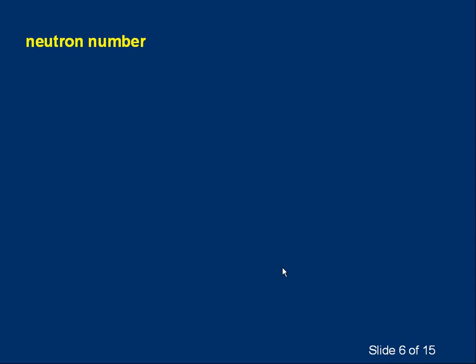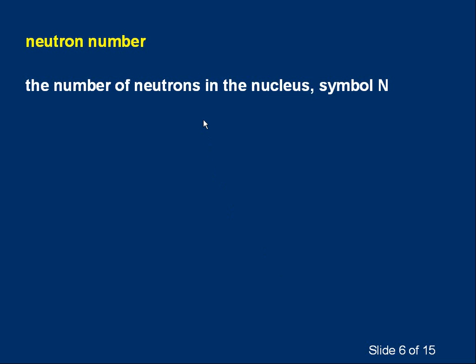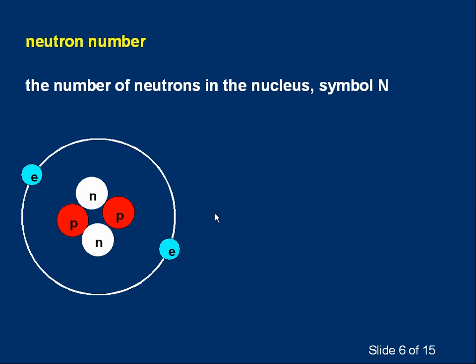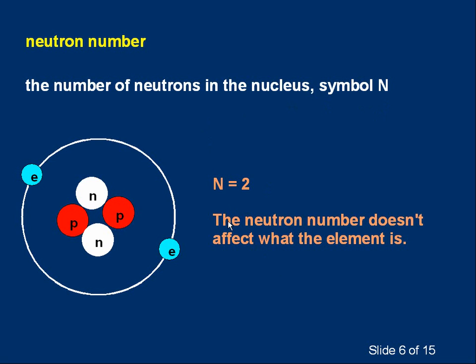Let's talk about neutron number. Pretty obviously, it's the number of neutrons in the nucleus. We give it the symbol capital N. What do you think the neutron number here is? Pretty obviously, two. The neutron number doesn't affect what the element is — we could add or take away neutrons and it's still the same element. If I added a neutron here, it would still be helium.